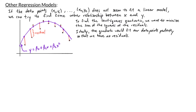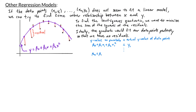Ideally we want the quadratic to fit our data points perfectly, which means there are no residuals. If that were the case, then for each x value, the corresponding y value on the parabola would equal the actual y value of the data point. For our first data point, we have x₁, so the corresponding point on the parabola would be β₀ + β₁x₁ + β₂x₁², and we want that to equal y₁. We can do this for every data point, so in the end we get β₀ + β₁xₙ + β₂xₙ² = yₙ.